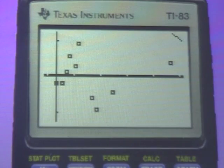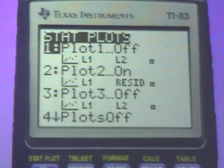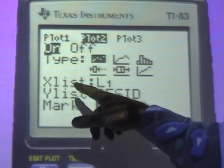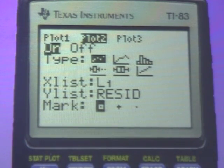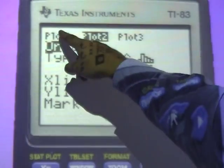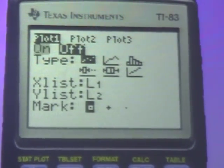Again, as you turn on, you go to one of these plots. Make sure you have L1 versus resid. You plot it. Zoom nine and you will find it. If I want to go back to the old graph, I just go back to plot one. Up to plot one. Turn plot one on.